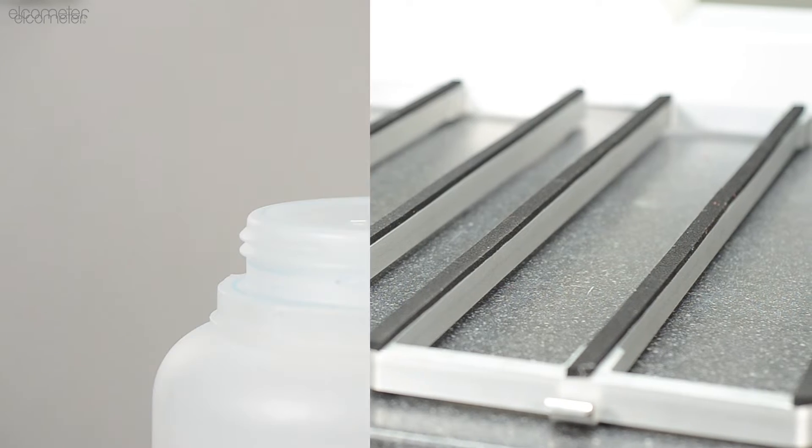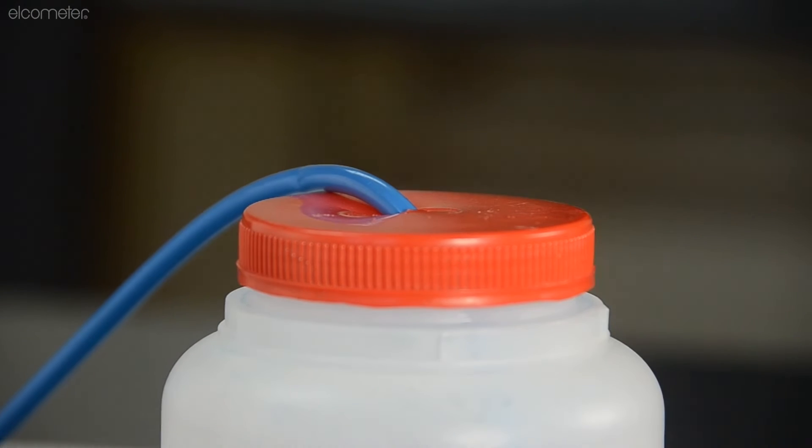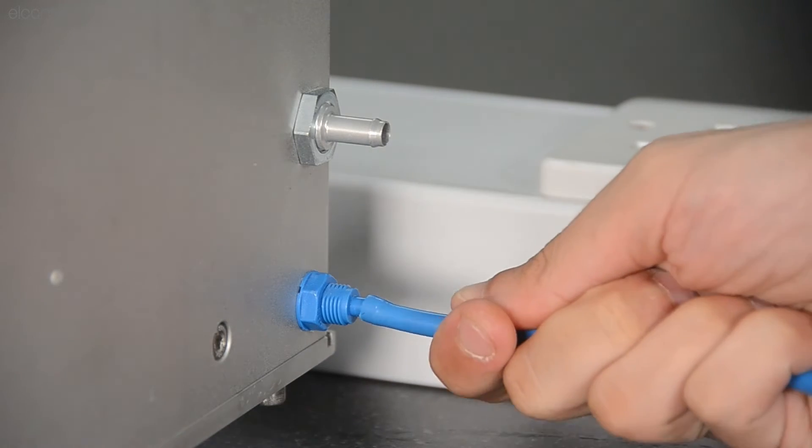Add your desired liquid into the container, ensuring the intake tube is pushed to the bottom of the container. Then, connect the other end of the intake tube to the blue connector at the right side of the tester.